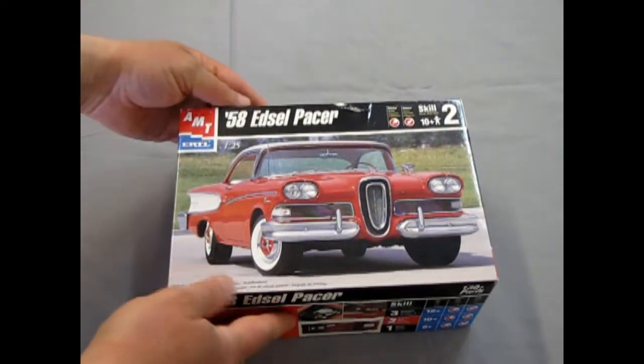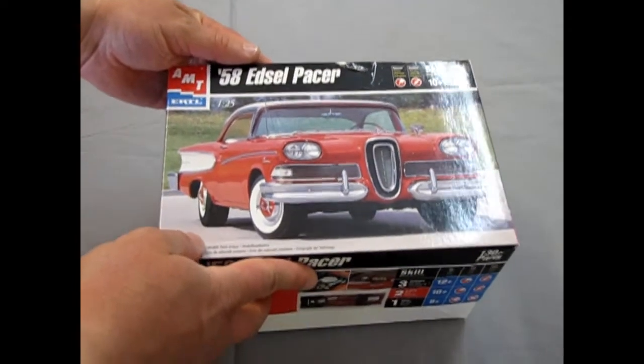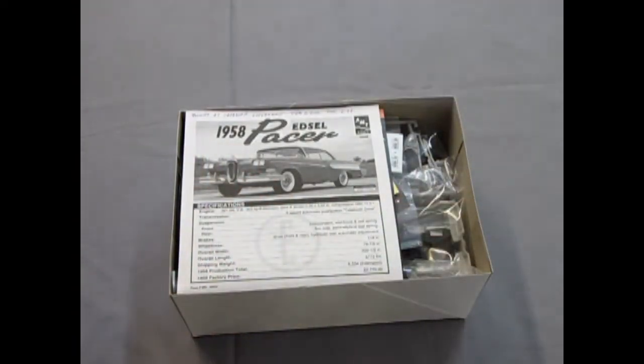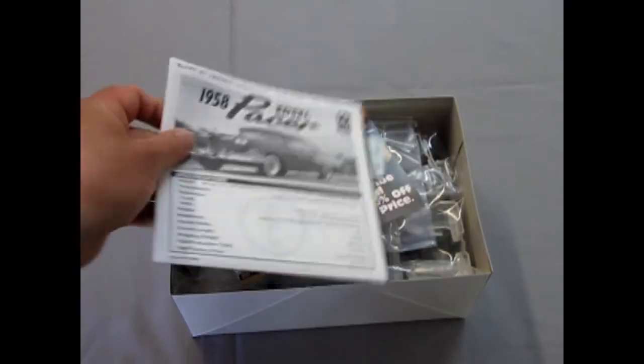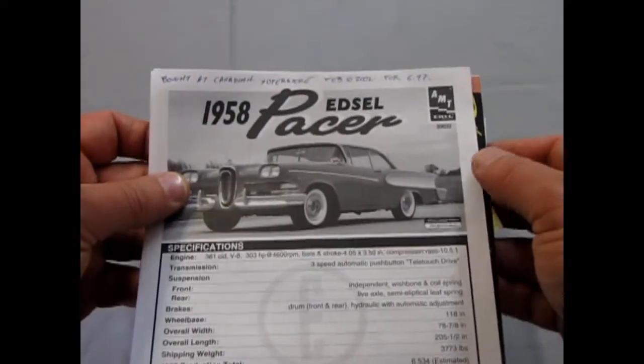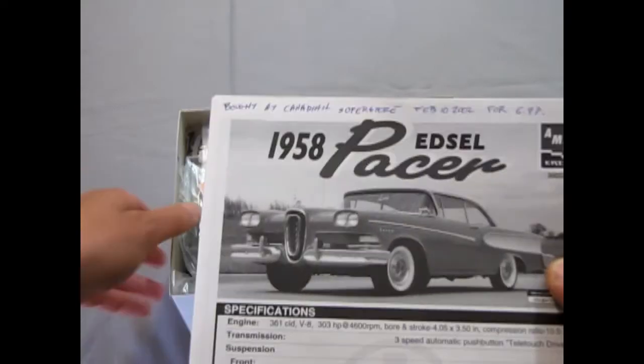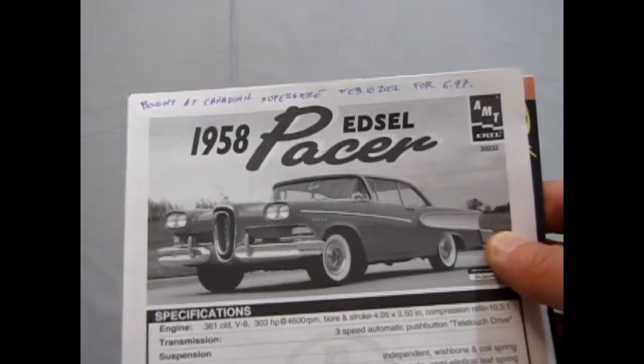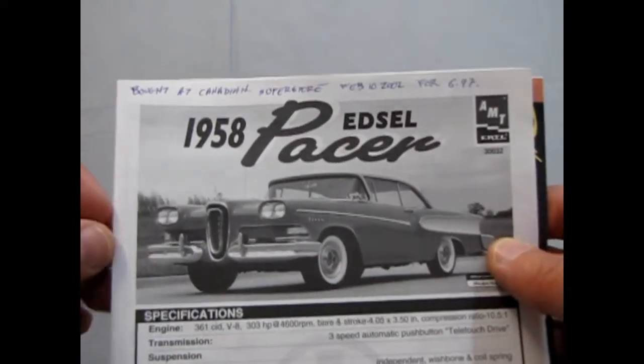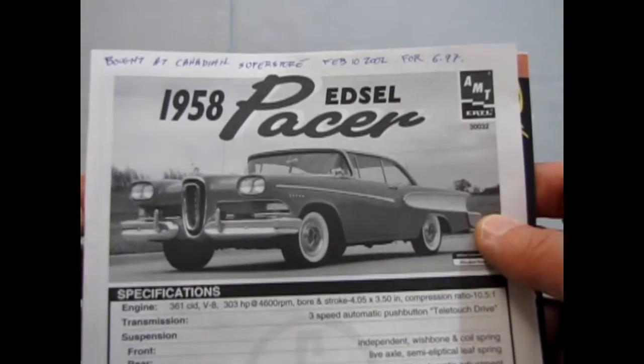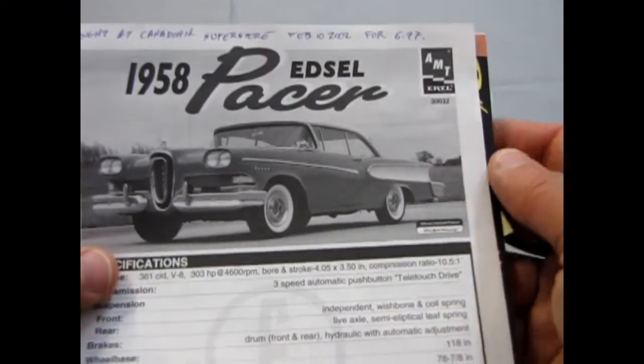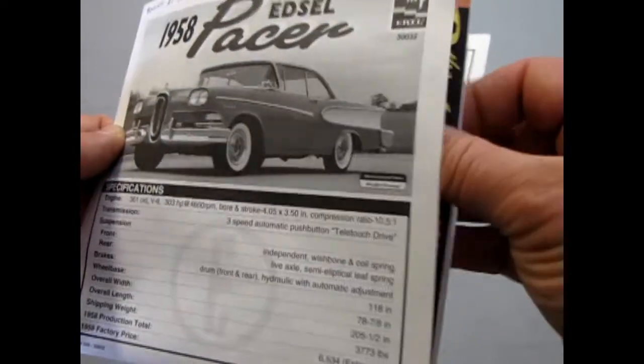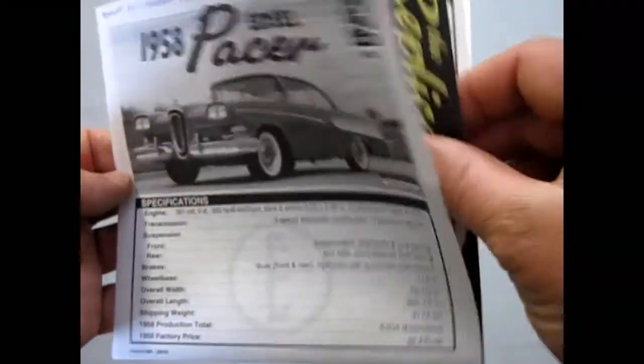Now let's open up the lid on our 1958 Edsel Pacer by AMT Ertl. And here again I've got the instructions with where I bought the model and when. Bought at Canadian Superstore, which was a grocery store, still is, on February 10th 2002 for six dollars and 97 cents, another price you will never ever see again in model kits.